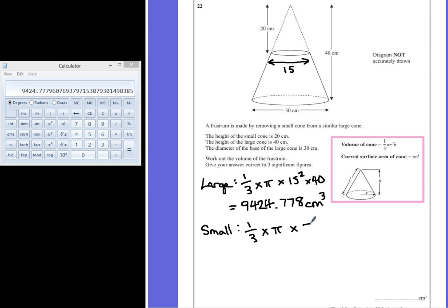So 7.5 squared multiplied by the height, which is 20, giving us a new volume of π times 7.5 squared multiplied by 20, and divide that by 3. That becomes 1178.097 cm³.